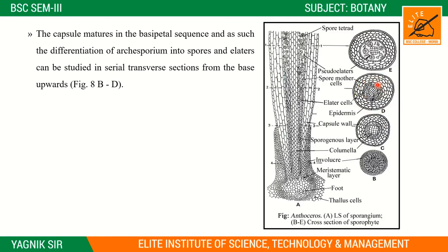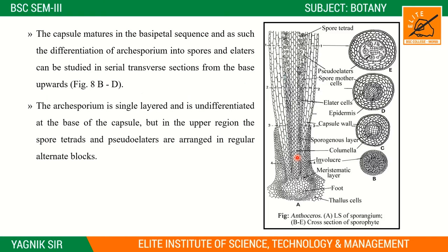In sections we can easily see sterile cells — these are called elater cells. These sterile cells are arranged among the spore cells. In the sporogenous cells, the archesporium is a single layer.